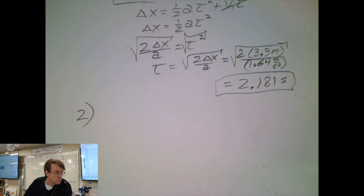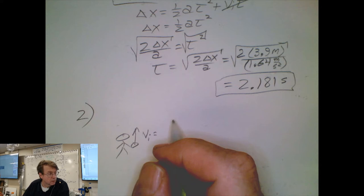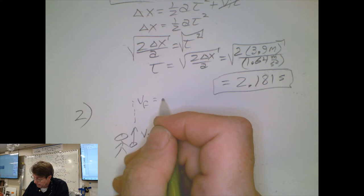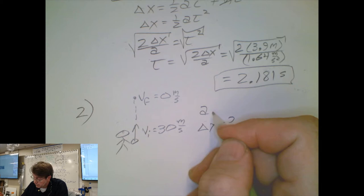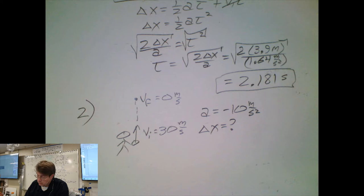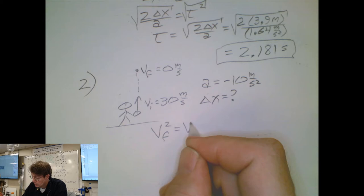Problem two: we have a ball thrown straight up with an initial velocity of 30 meters per second. It asks how high does it go — that would be the displacement from its initial position. We're on Earth. At the highest point, the velocity will be zero — that's something we can add that isn't explicitly stated. Since we're on Earth, the acceleration due to gravity is 10 meters per second squared. We don't have time, so the no-time equation would work.